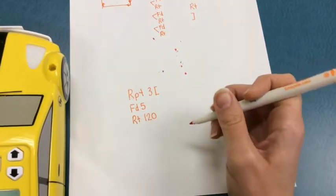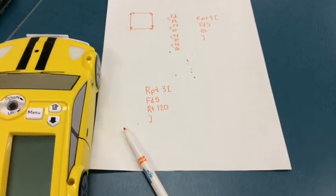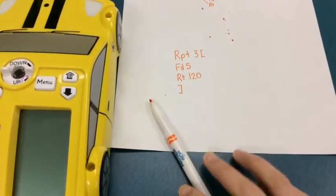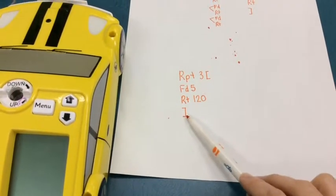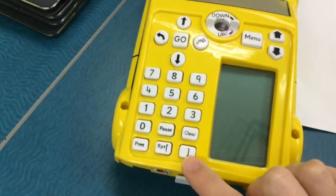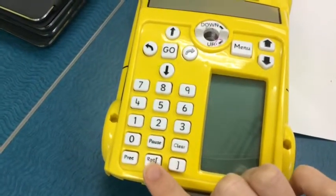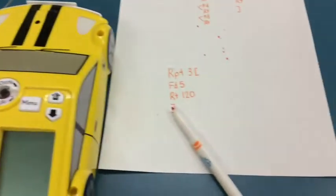Remember when we are using the repeat directions, we have to have that end bracket at the end of our directions in order for our Probot to know what to repeat. Remember that is located down here at the bottom of our Probot next to our repeat button.